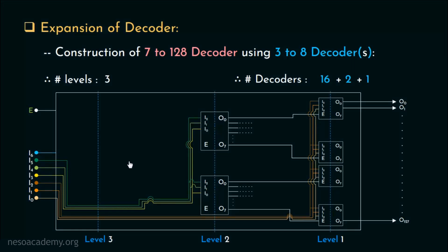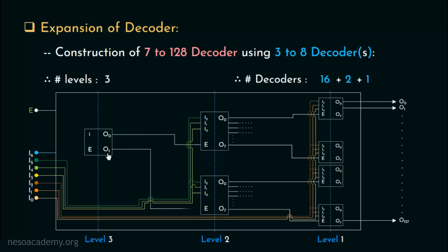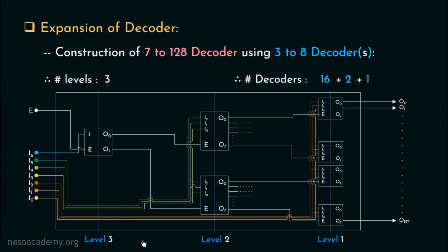Since we need a decoder to handle the enable lines of only these two decoders of level 2, a simple 1-to-2 decoder will be sufficient as well as cost-effective for this construction. The output O0 will control one enable line and the output O1 will be in charge of the other decoder's enable line. Both of these will actually be controlled by the input line I6, that is the most significant bit of the input sequence. Finally, the enable line of this entire organization will be given to this 1-to-2 decoder's enable input. So with this organization, we can actually save cost and reduce wastage, especially with the last decoder of the last level.